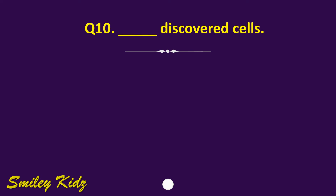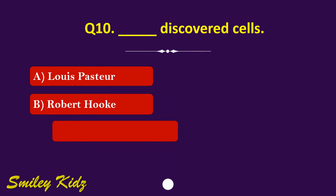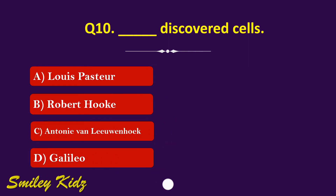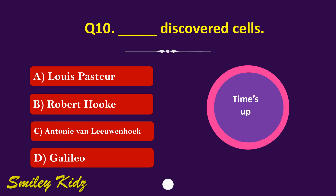Question number 10. Dash discovered cells. The options are: A. Louis Pasteur, B. Robert Hooke, C. Antony Van Leeuwenhoek, or D. Galileo. Your time starts now. Your time is up and the right answer is option B. Robert Hooke. Robert Hooke discovered cells.